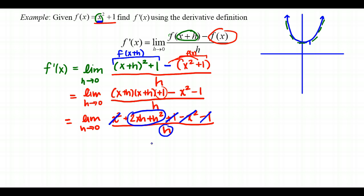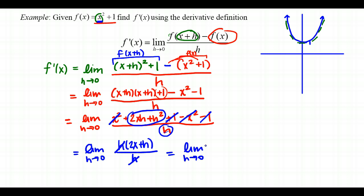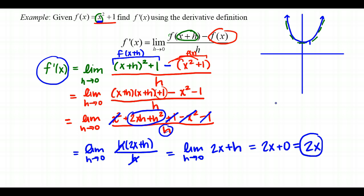With 2xh plus h squared in the numerator over h, we need to eliminate the h in the denominator. We factor an h out of the numerator: h times 2x plus h, all over h. The h's cancel, leaving the limit as h approaches 0 of 2x plus h. Now direct substitution works: replacing h with 0 gives 2x plus 0, which is just 2x. So f prime of x equals 2x.